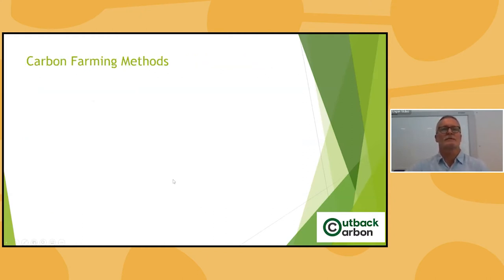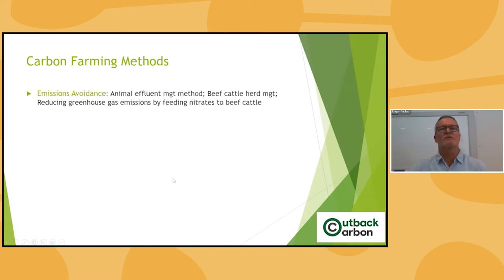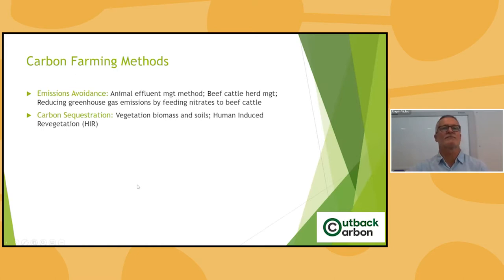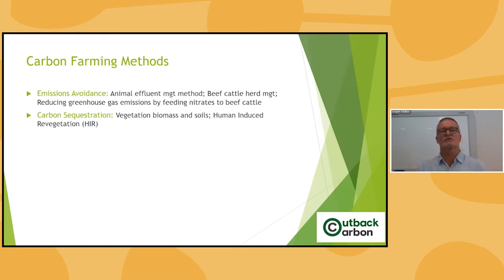Getting on now towards carbon farming methods available — there's what we call emissions avoidance, where you get paid for carbon you're going to emit, but if you take a different management technique or technology, you get paid for the emissions you avoid into the future. The ones we're really concentrating on today are vegetation and biomass, and also Human-Induced Regeneration — HIR — which is more about changing management in predominantly the rangelands and a grazing system whereby the vegetation has been suppressed for at least 10 years, and by changing management you actually make that vegetation grow and sequester carbon.